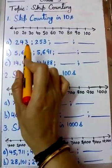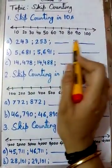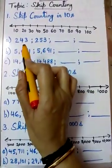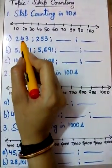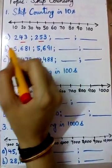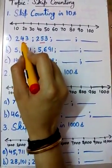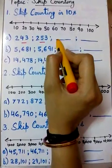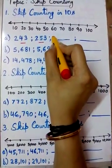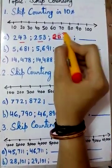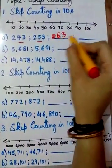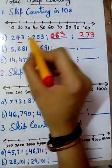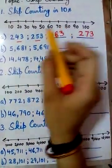Let us take one example: 243, 253, and two blanks. We have to continue this pattern. If you observe these two numbers, which digit changes? Yes, the digit at the tens place changes — here it is 4 (value 40) and here it is 5 (value 50). After 50 comes 60, so the next number is 263. After 263 comes 273. We observe that only the tens place is changing: 4, 5, 6, 7.